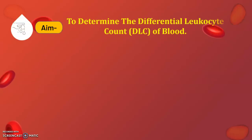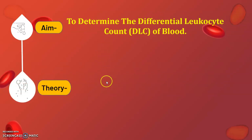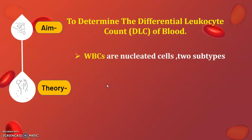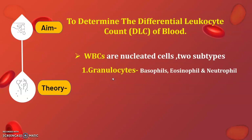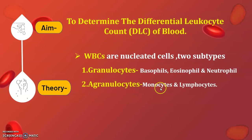The aim of this practical is to determine the differential leukocyte count of blood. The theoretical background: WBCs are nucleated cells with two subtypes. Number one is granulocytes, divided into basophils, eosinophils, and neutrophils. Number two is agranulocytes, containing monocytes and lymphocytes. Granulocytes have granules present in the cell, whereas agranulocytes have an absence of granules.